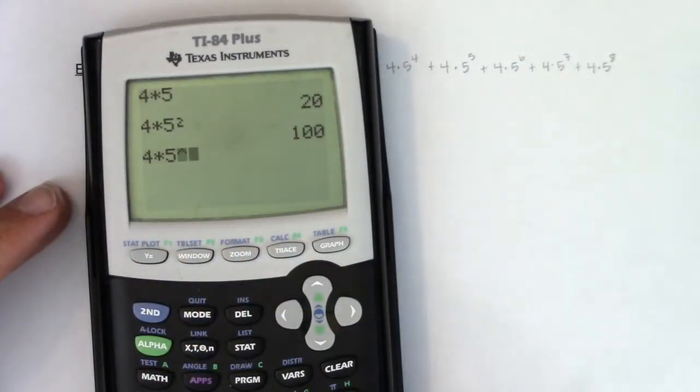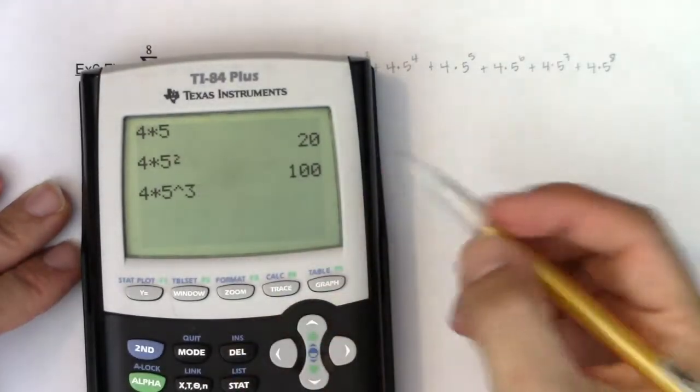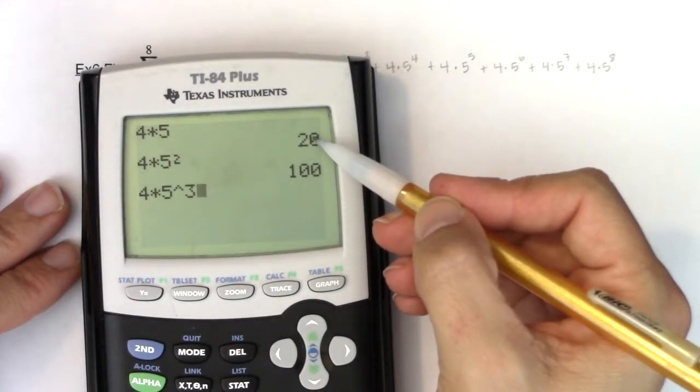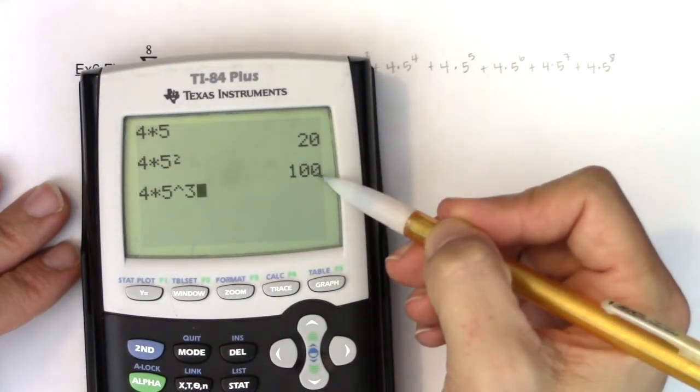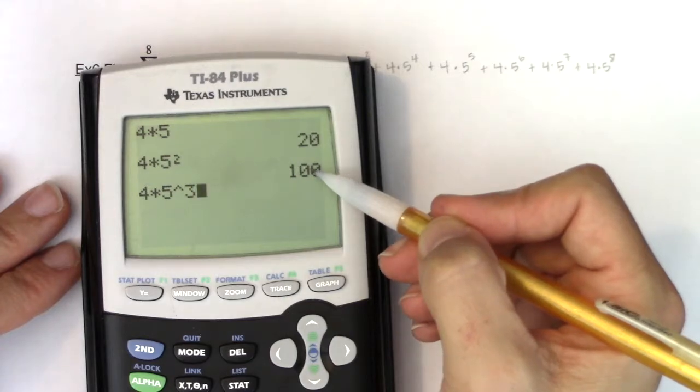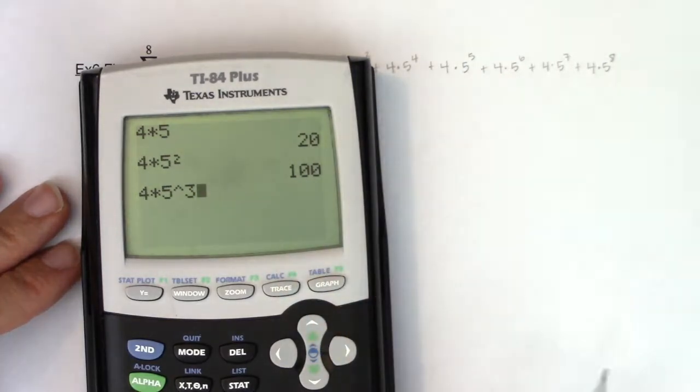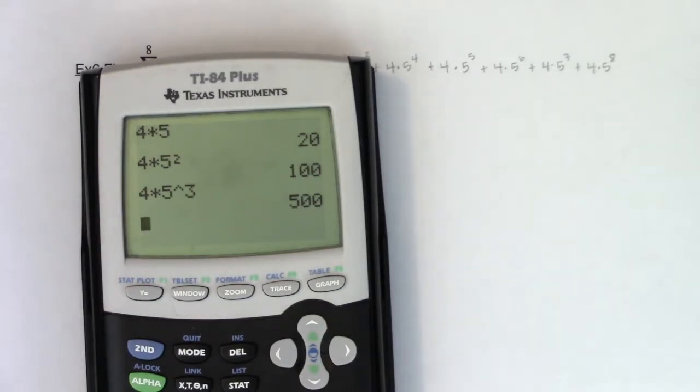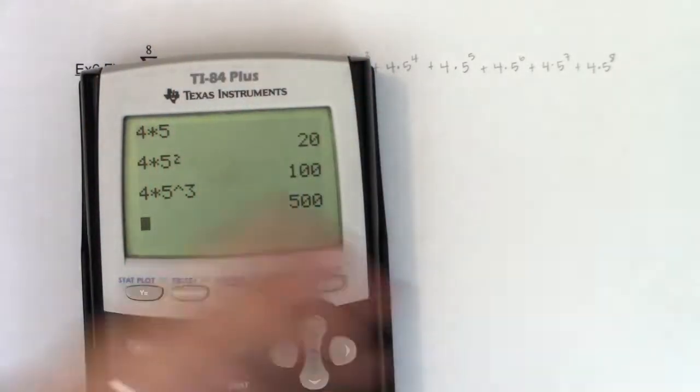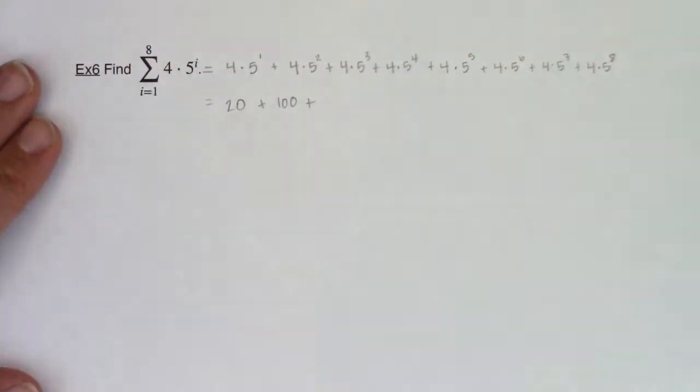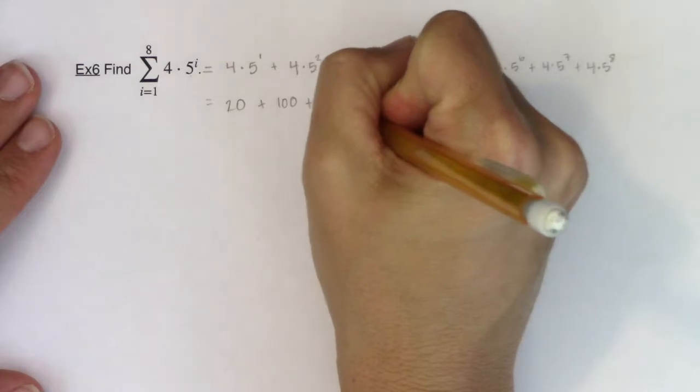To get from the first term in my sequence to the second term in my sequence, I needed to multiply by 5. So this would be plus 100. What is this next term? Well, it's 4 times 5 cubed. Now before I hit enter, I want you to think about the pattern. To get from 20 to 100, we multiplied by 5. Well, to get from 100 to the next term in my sequence, I'm going to multiply by 5. So maybe you're starting to hear this as a geometric sequence. Every term, to get from one term to the next, I keep multiplying by 5. So this would be plus 500.